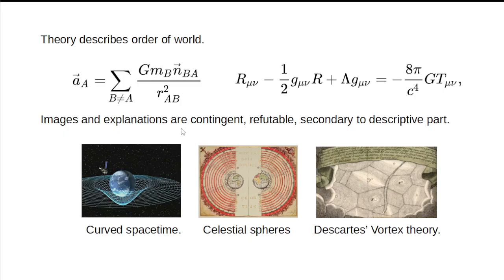Meanwhile, explanations and images are refutable and unnecessary. That is method of physics according to Duhem. Universal unchanging order among measured quantities is being described by theory. Images and explanations are contingent, uncertain and secondary.